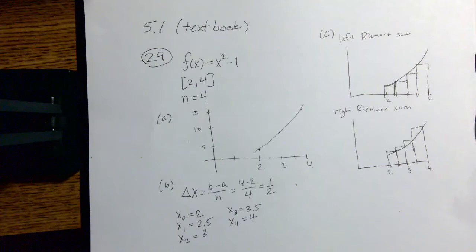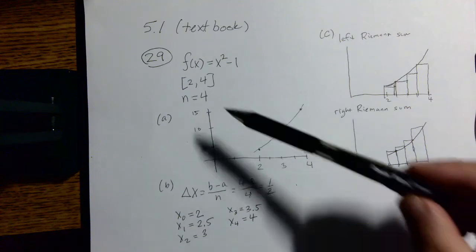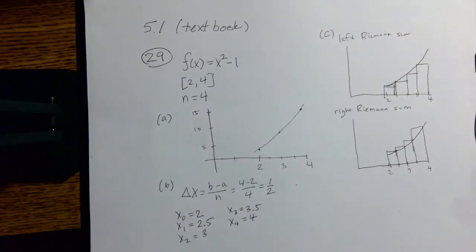So we've got f(x) = x² - 1. The interval is from 2 to 4, and n = 4 is the number of sub-intervals. Any Riemann sum problem is going to tell you how many sub-intervals, what's the function, what's the interval. That's information that we need to know.